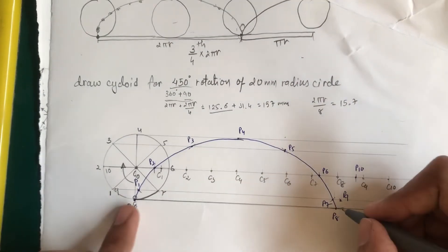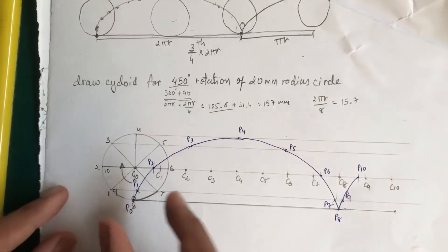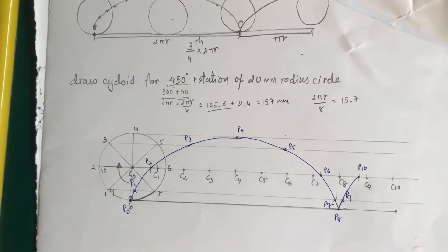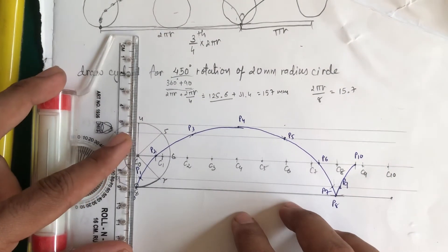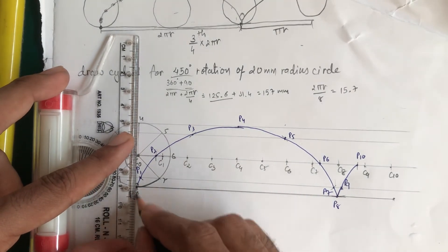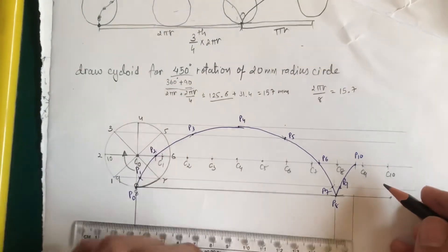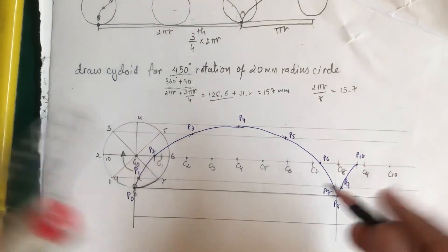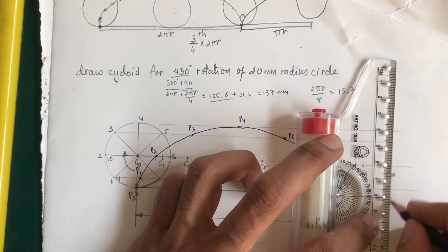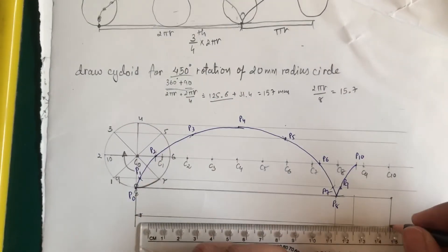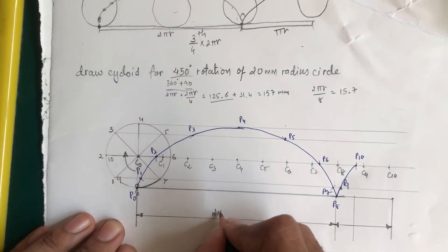The smooth curve through all the plotted points forms the complete cycloid for 450° rotation. The first portion spanning 2πr corresponds to one full rotation, and the remaining portion of 2πr/4 covers the extra 90°. Together they form the complete cycloid curve.